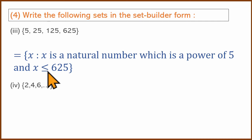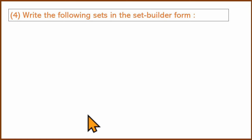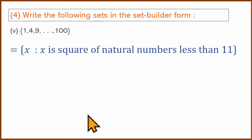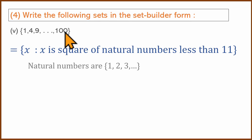Next: 2, 4, 6... These are positive even natural numbers. Fifth one: 1, 4, 9, ..., 100 — these are squares of natural numbers: 1², 2², 3²... up to 10² = 100. So x is a natural number less than or equal to 10, and the set is {x² : x ∈ ℕ, x ≤ 10}.